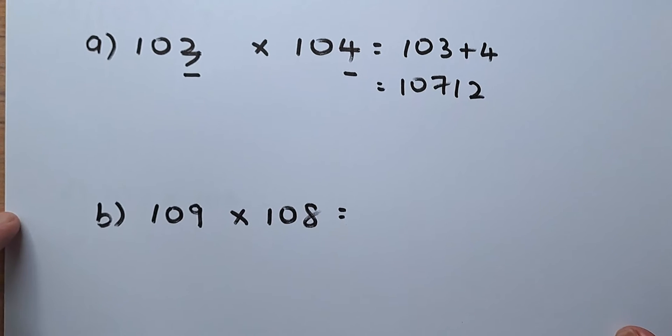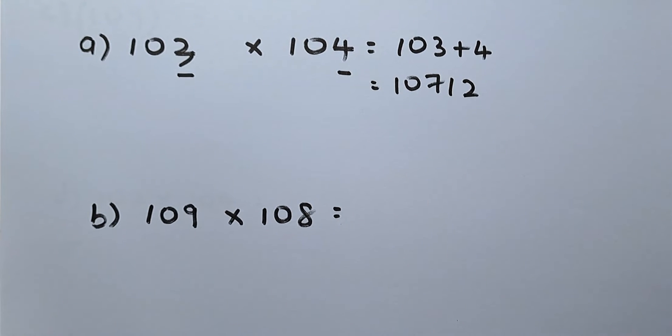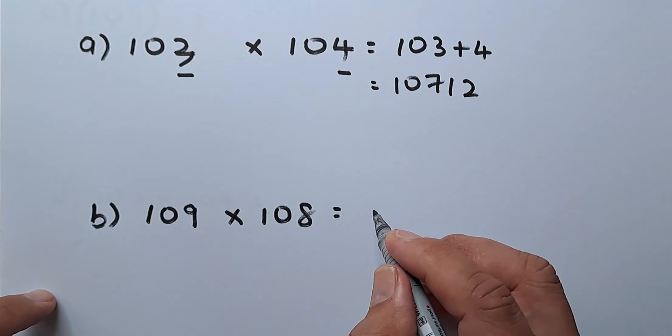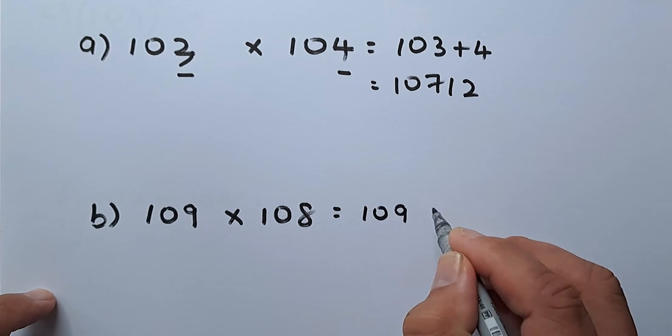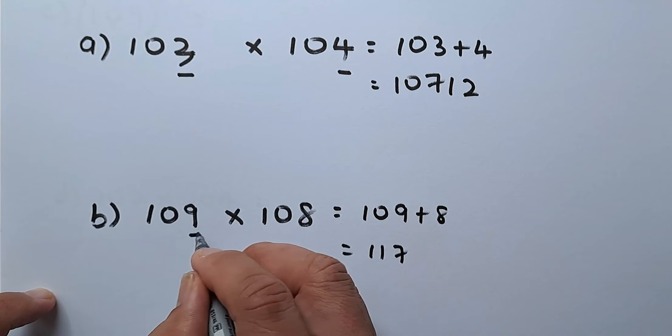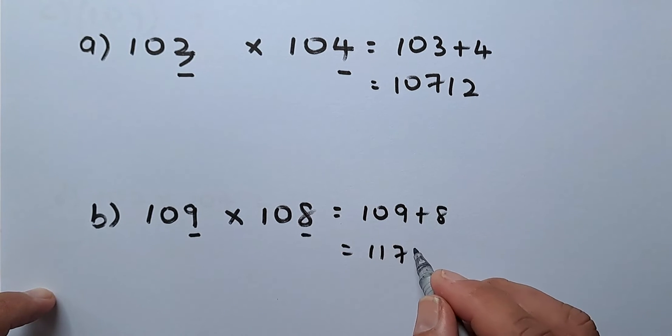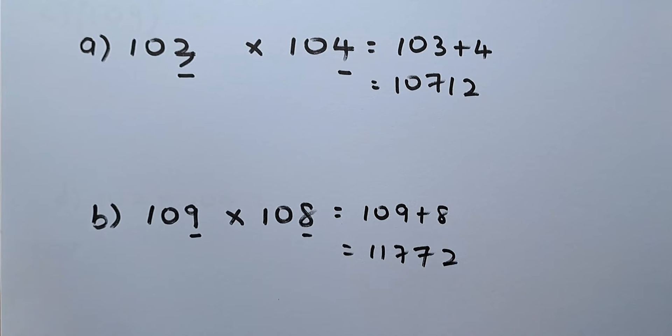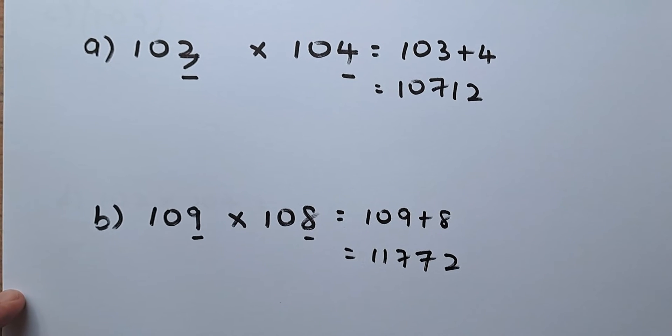Okay, let's go to the second example. 109 times 108. So 109 plus 8 is going to be 117. And the last step, you multiply 9 times 8 is going to be 72. And the answer is 11,772. That's simple, right?